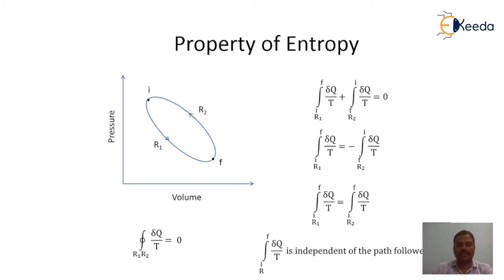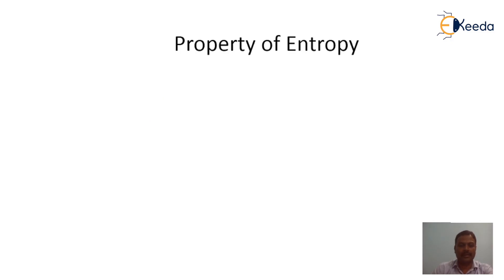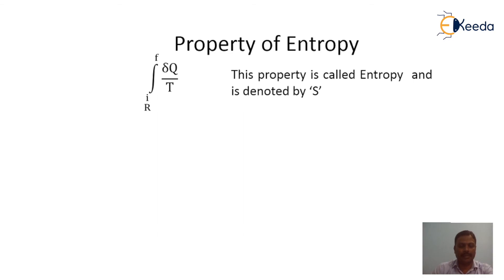The integral from I to F of δQ/T for a reversible process is independent of the path followed — whether R1 or R2, the value remains the same. Therefore there exists a property such that the integral from I to F of δQ/T for a reversible process is a property, and that property is called entropy, denoted by S. If S_I is the entropy at state point I and S_F is the entropy at state point F, then the integral from I to F of δQ/T for a reversible process equals S_F minus S_I.